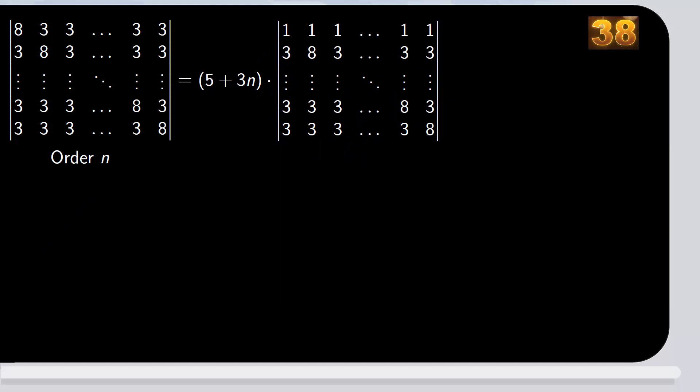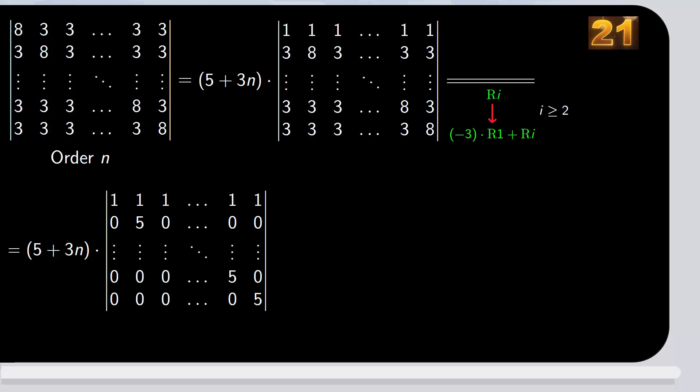So, now it's very easy. We copy (5 + 3n) times the determinant, copy the first row, and replace each of the remaining rows by minus 3 times the first row plus that row. And there it is.